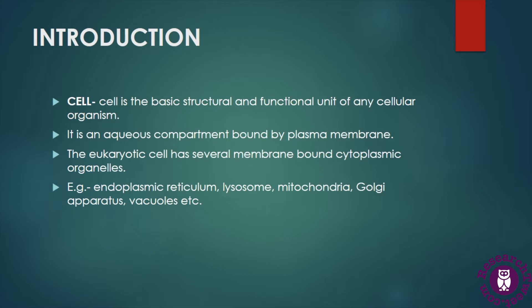Eukaryotic cells contain endoplasmic reticulum, lysosome, mitochondria, Golgi apparatus, vacuoles, a proper nucleus, and many other cellular organelles. These cellular organelles are responsible for different types of functions for the cell.